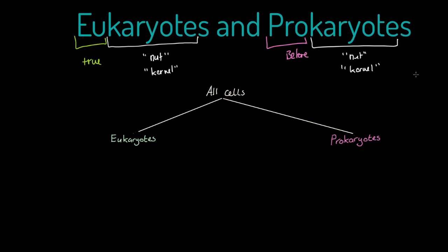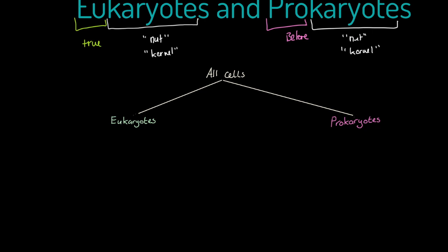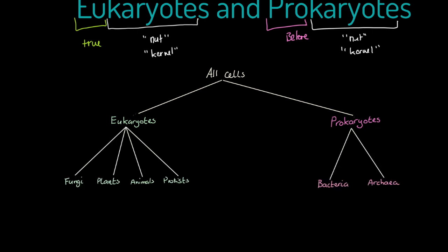Let me introduce you to the subcategories of each group. When we are talking about eukaryotic cells, we are talking about plants, animals, fungi, and protists. When we are talking about prokaryotic cells, we are talking about bacterial cells and archaea.